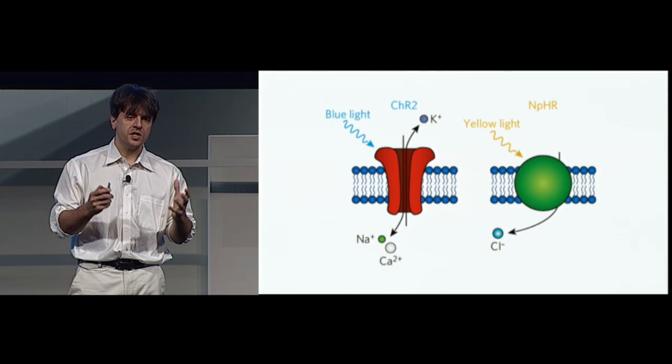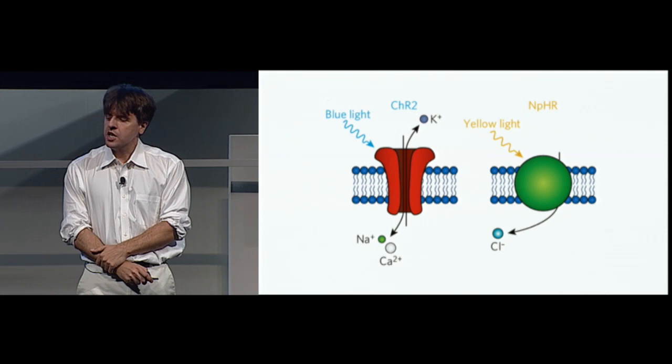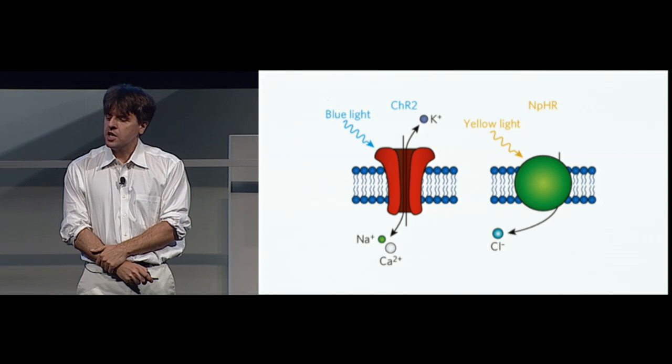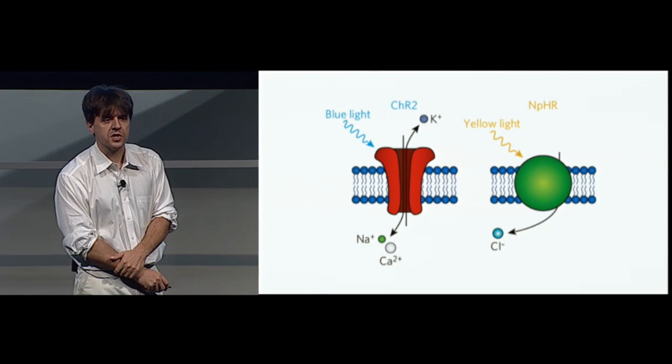The one on the left moves positive ions, particularly sodium ions, into the cell, and that ends up being a positive stimulus. It triggers neural firing. The one on the right moves anions, particularly chloride, into the cell, and this turns out to shut down neurons, and they respond to different colors of light. We have many more of these. We've engineered them to have all kinds of different ion flow and kinetics, and there's an incredible diversity that we've been able to leverage and also create.